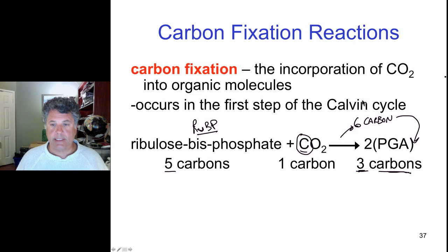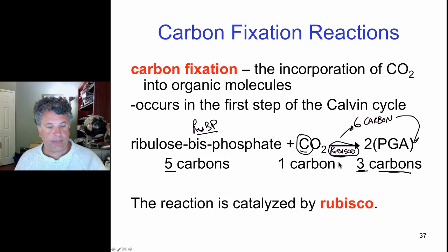And the enzyme that catalyzes this reaction is known as rubisco, R-U-B-I-S-C-O, rubisco. It's one of the most abundant enzymes on the planet because of all the photosynthesis that's occurring on the Earth. And that is rubisco.